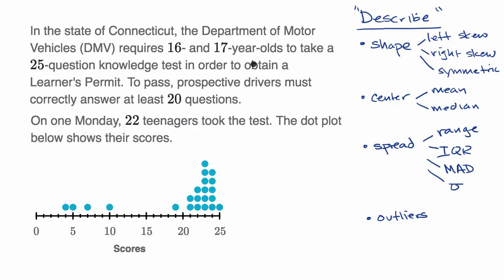So now, let's describe the distribution right over here. In the state of Connecticut, the Department of Motor Vehicles requires 16 and 17 year olds to take a 25 question knowledge test in order to obtain a learner's permit. To pass, prospective drivers must correctly answer at least 20 questions. On one Monday, 22 teenagers took the test. The dot plot below shows their scores.